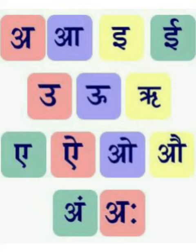A, AA, E, EE, U, UU, R, RU, A, AI, O, AU, AN, AH. Easy! Shall we repeat it again? A, AA, E, EE, U, UU, R, RU, A, AI, O, AU, AN, AH.